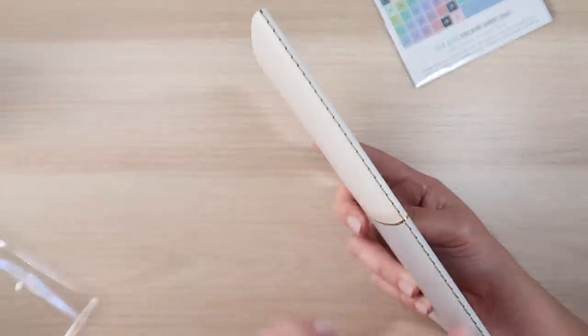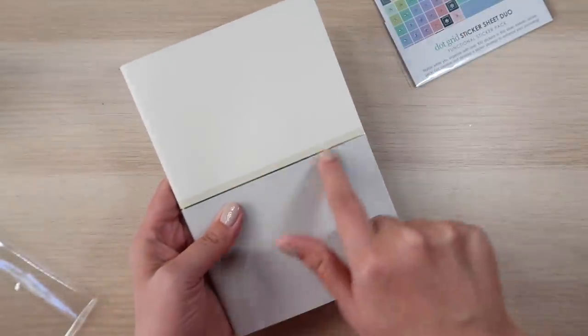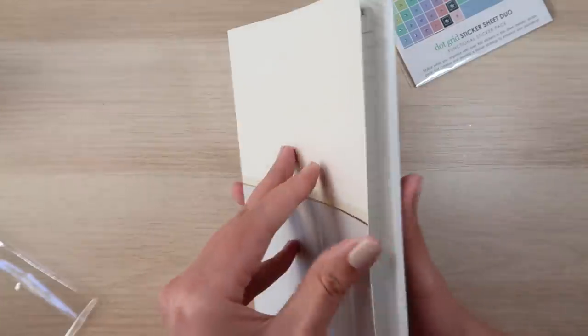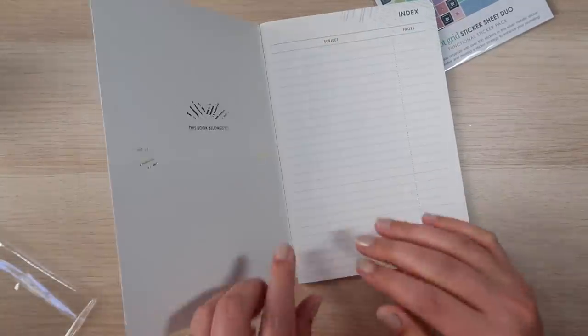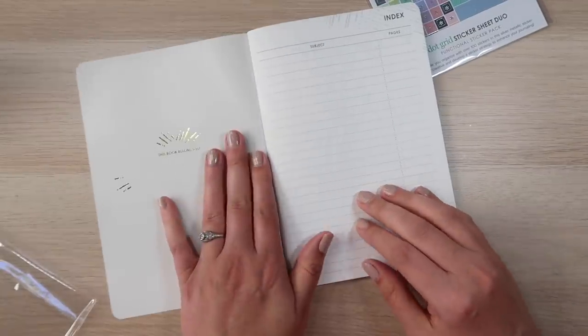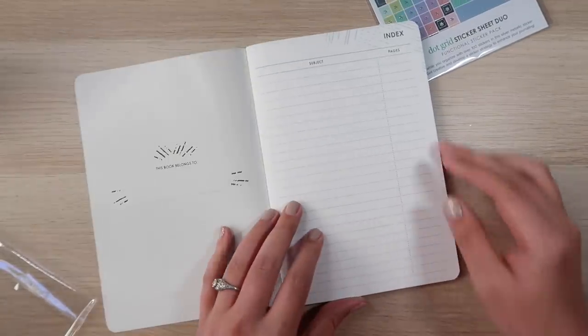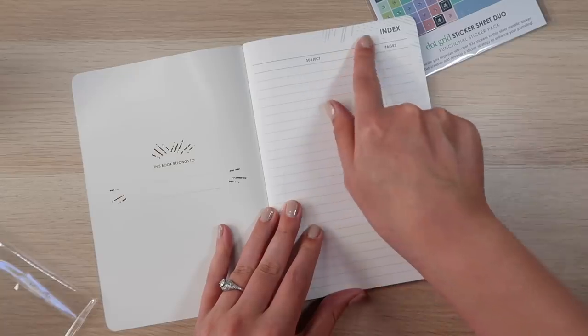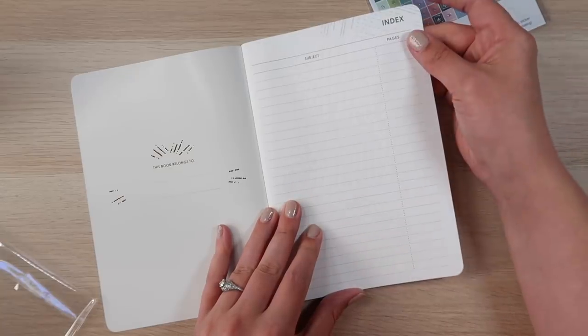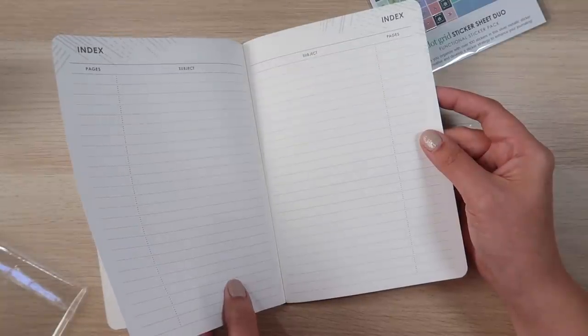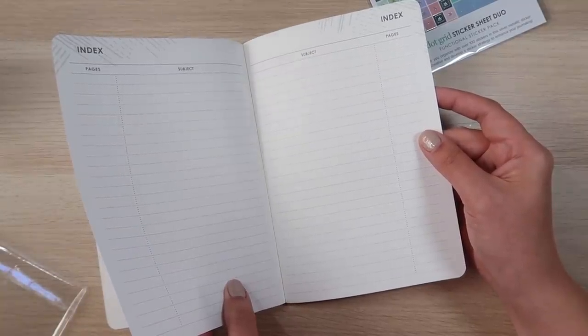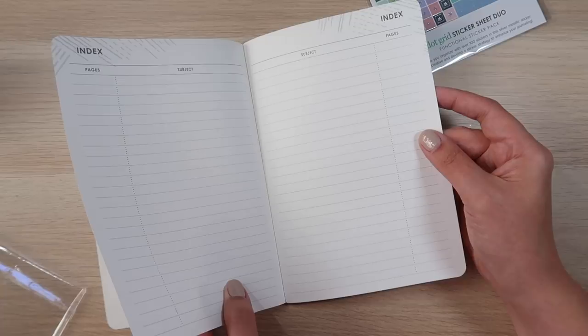It's got nice stitching along the side. There's the block colors and this is foil writing down at the center. When you open it up on the inside, there is the book belongs to foil and the cover doesn't really like you that much. And then there's index pages and it's got the woven wheat situation along the top, subject, and then pages. It gives you three index pages, which I think is probably more than enough pages for an 80 page journal.